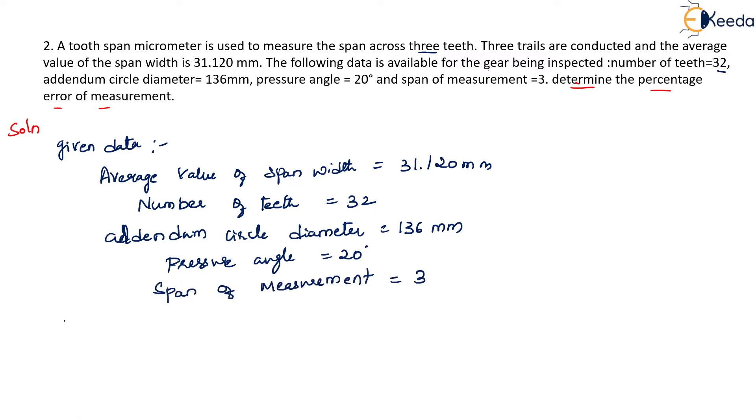So when we get into the solution, we know that theoretical span width has a formula. It can be written as W. Here, because we are conducting 3 trials, let us write W3 trial, that is: Nm cos theta times [pi s by n minus s by 2n] plus [tan theta minus theta]. So this is the theoretical span width formula.